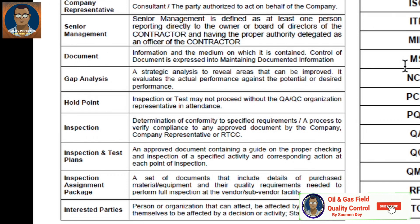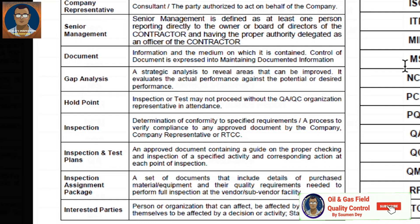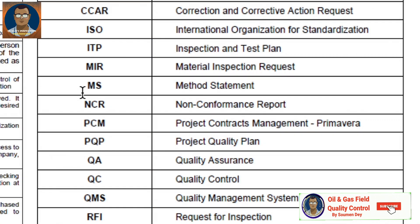You can stop the slide and go through the terms if you are interested. Some abbreviations: CCAR means correction and corrective action report, ISO means International Organization for Standardization, ITP means inspection and test plan, RFI means request for inspection, and QMS means quality management system.